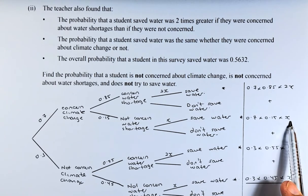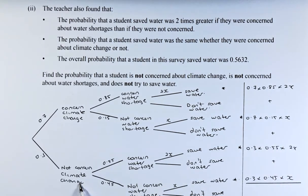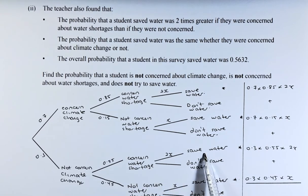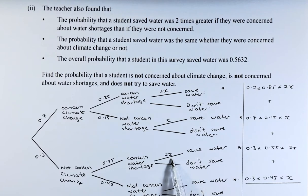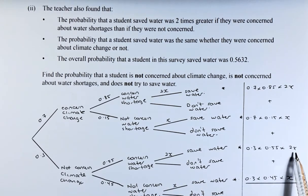And if they are not concerned about climate change, they are concerned about water shortages and they saved water, the probability is 0.3 times 0.55 times 2x. That will give us that probability there.